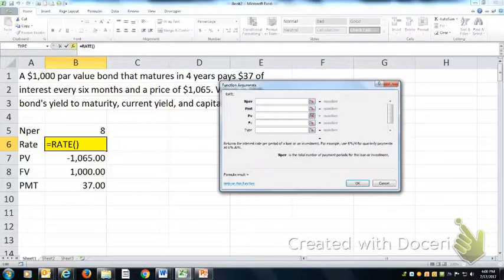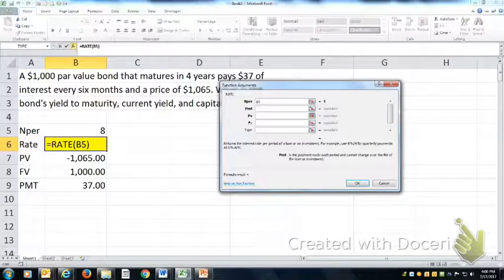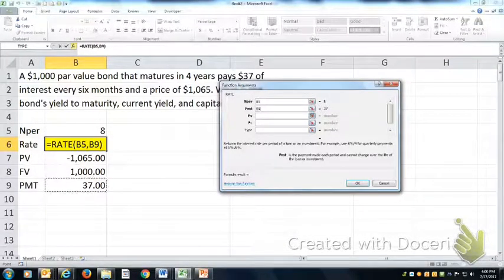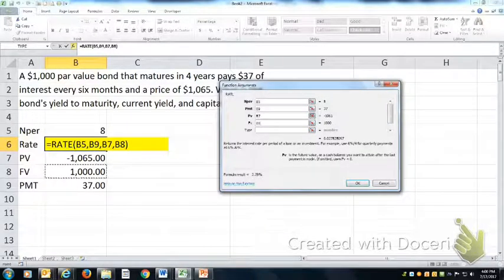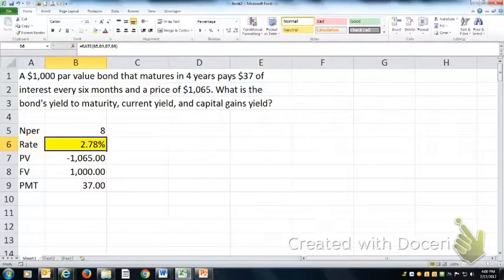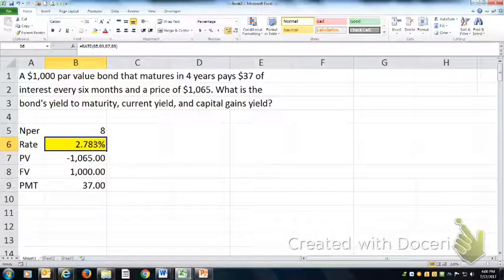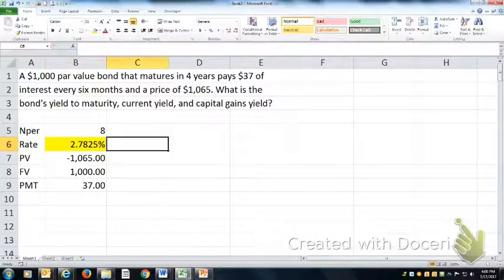Open the dialog box. It goes number of periods, payment, present value, future value. And when we solve for that, what I have is a semi-annual interest rate.